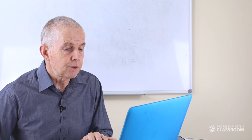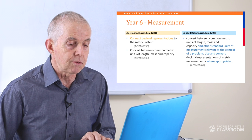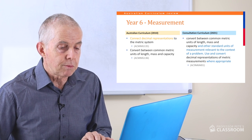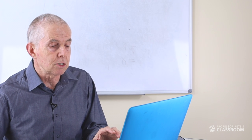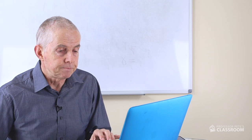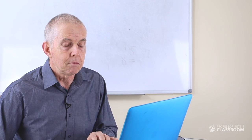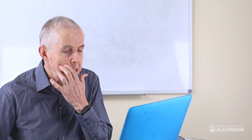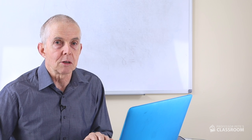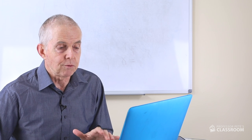We're now going to look at measurement. The first content descriptor says: convert between common metric units of length, mass, and capacity, and other standard units of measurement relevant to the context of a problem; use and convert decimal representations of metric measurements where appropriate. This used to be two content descriptors combined into one. It mentions other standard units of measurement — implying non-metric units — which are used in a few places in Australia, so it's appropriate for students to be familiar with those.